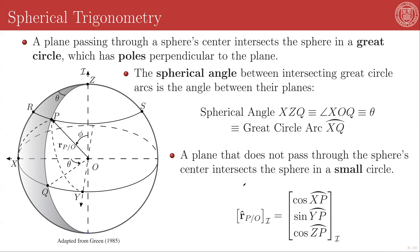We can thus write the unit vector of our P relative to O, the same example that we were doing previously as the cosine of the arc XP, the sine of the arc YP, and the cosine of the arc ZP, like so. So here's XP dashed, here's YP dashed, and here is ZP, that part of the arc.